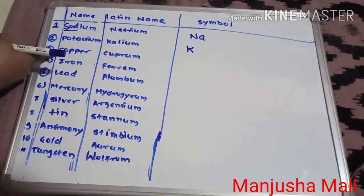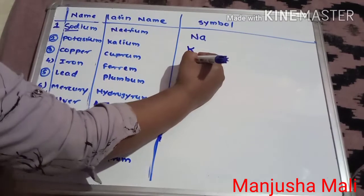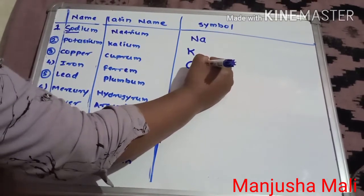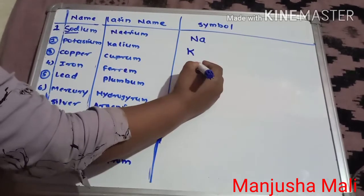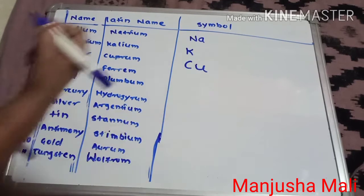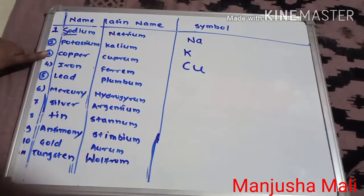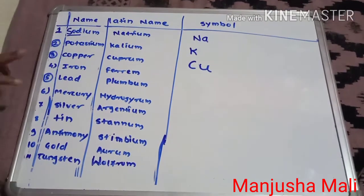Copper. Copper, so symbol of copper is Cu. Simple trick, Latin name of copper is Cuprum.